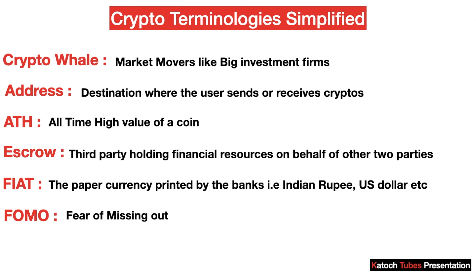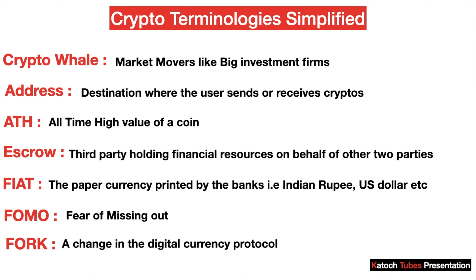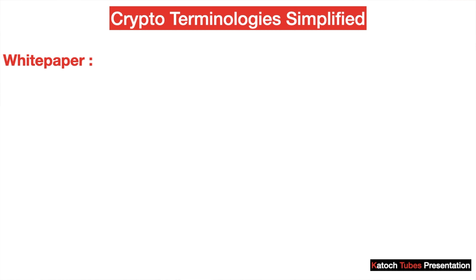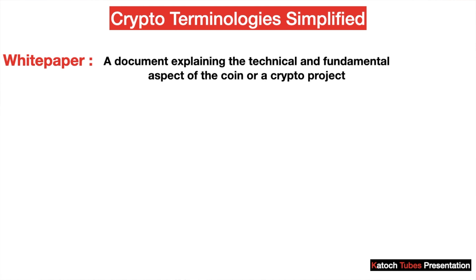Next is fork. Fork means a change in the digital currency protocol. It can be a hard fork or a soft fork. Hard fork means there is a permanent change in the protocol, and a soft fork is the opposite of it. White paper is published by the developers or founders of a particular coin, in which they state how the coin works technically, what it is offering, and what problem it is going to solve.